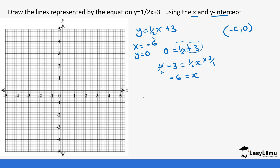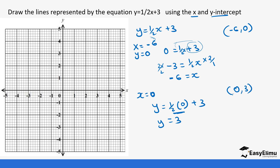For the y-intercept, x = 0: y = ½(0) + 3 = 3. So the y-intercept point is (0, 3). We now have two points: (-6, 0) and (0, 3). Our graph is a bit small and may not show -6, but you can put these points in your graph and join them with a straight line.